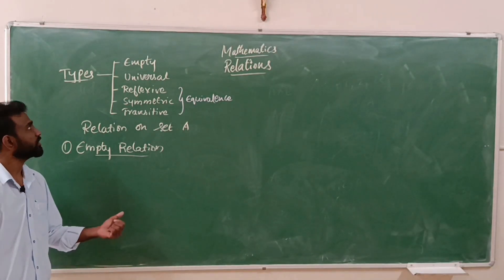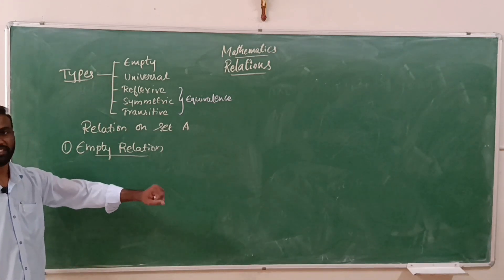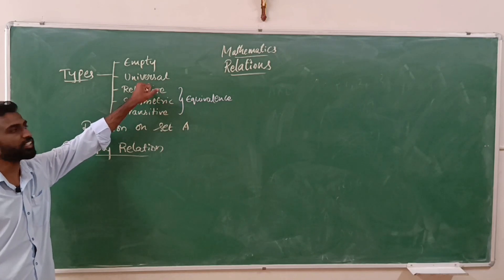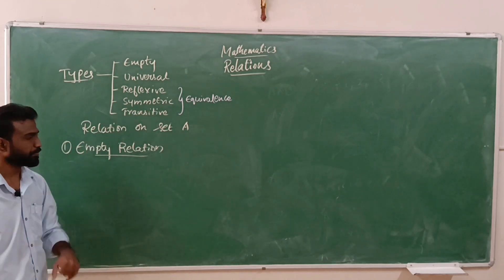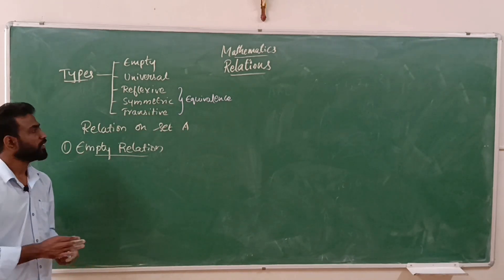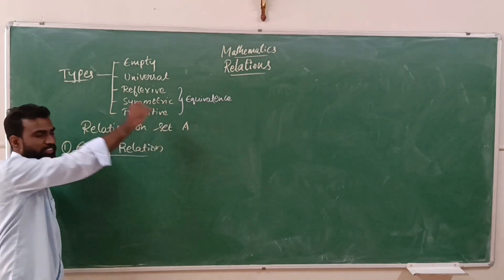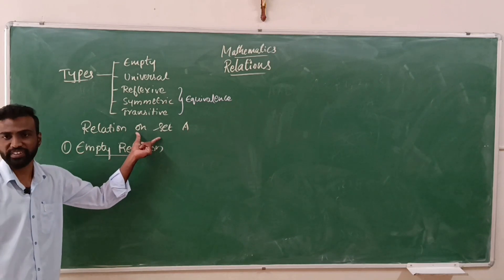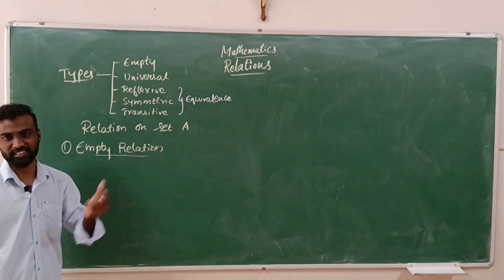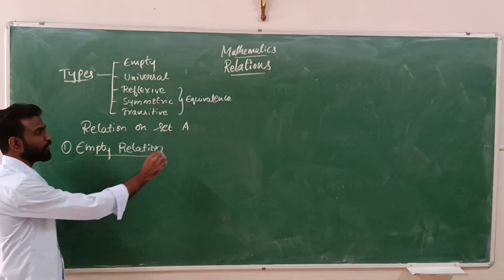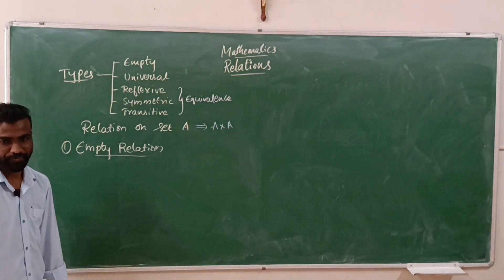Today we are going to discuss types of relations. There are five types: empty relation, universal relation, reflexive relation, symmetric relation, and transitive relation. These types of relations are based on relation on set A, which we already discussed in a previous lecture — relation on set A is any subset of the Cartesian product A cross A.